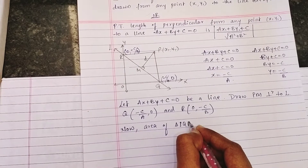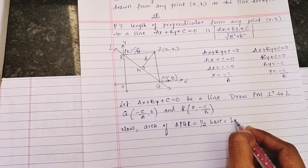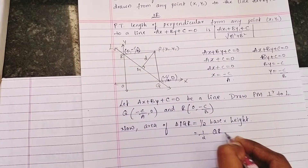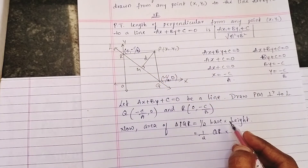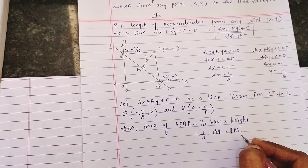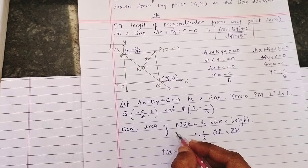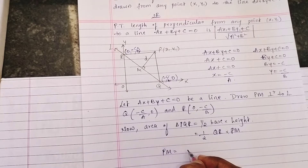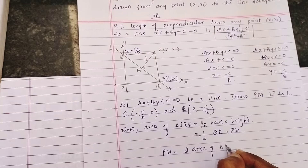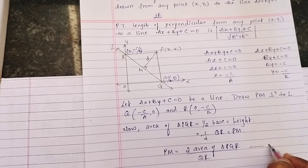Area of triangle PQR = ½ × base × height. Here QR is the base and PM (the perpendicular distance) is the height. So: Area = ½ × QR × PM. Rearranging, PM = (2 × Area of △PQR) / QR. We consider this as equation number one.